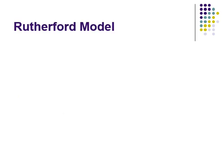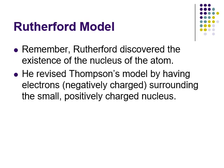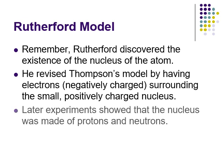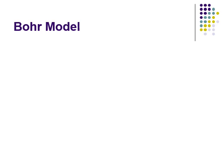Then came the Rutherford model, where things start to get interesting. Rutherford discovered the nucleus, revising Thomson's model. We now have electrons — still negatively charged — surrounding a small, positively charged nucleus. Later experiments showed the nucleus was made up of protons and neutrons, with the nucleus in the center and negatively charged electrons scattered around it.